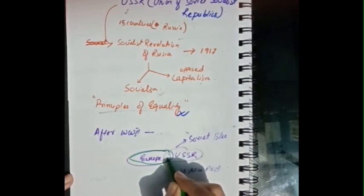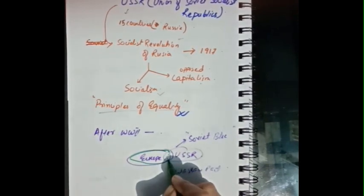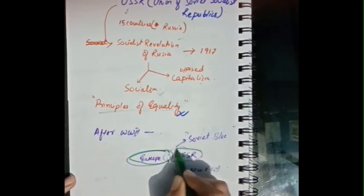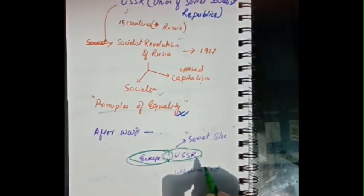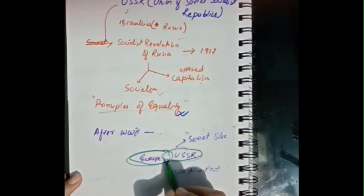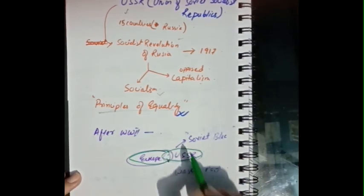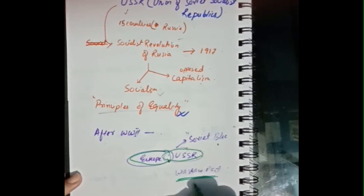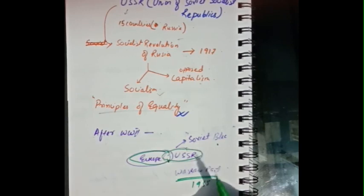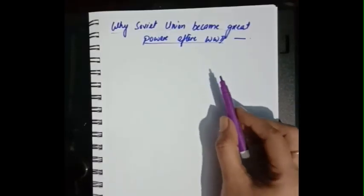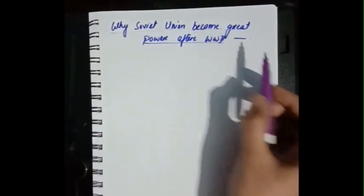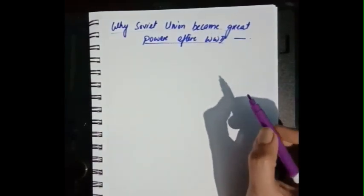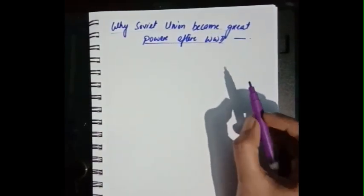As we have seen, the Eastern Europe countries allied with the USSR after World War II, and this group is known as the Soviet Bloc. The Warsaw Pact, signed in 1955, was a military alliance that held all these countries together.